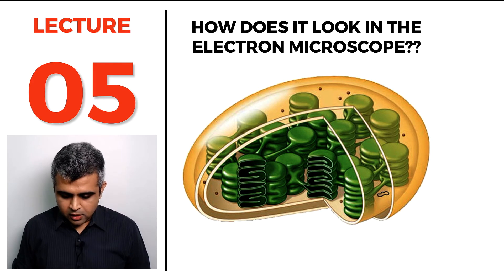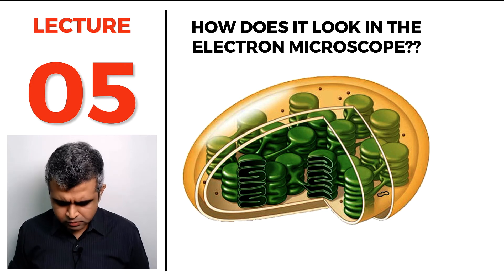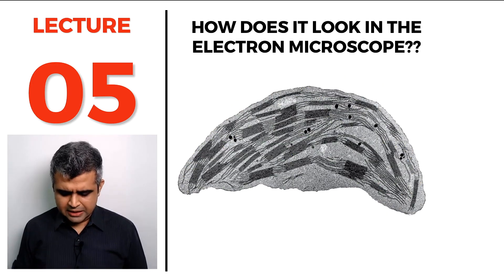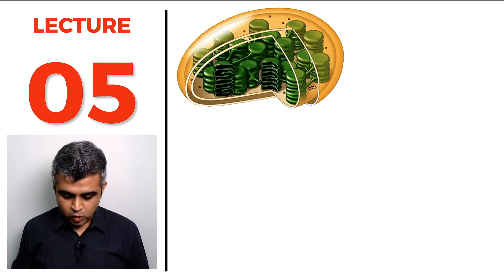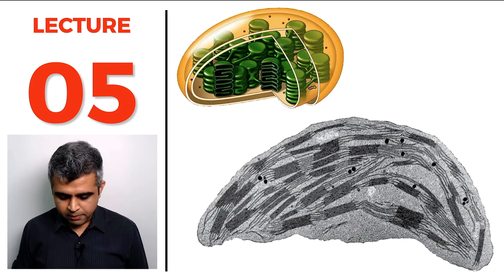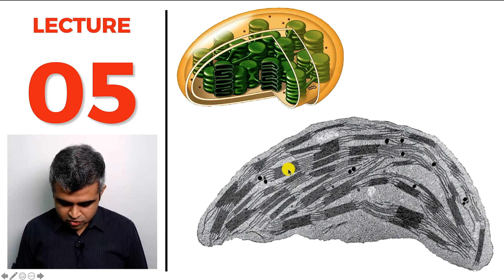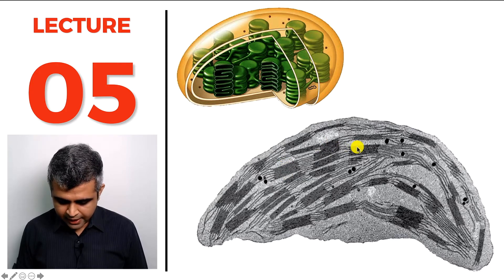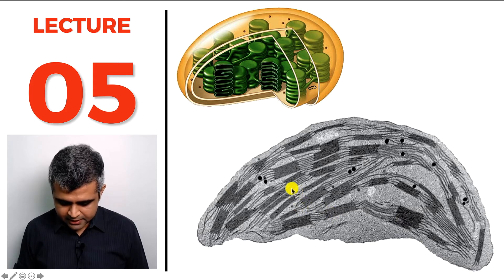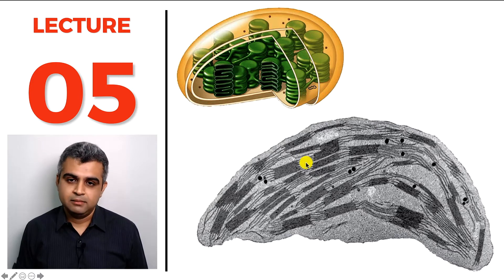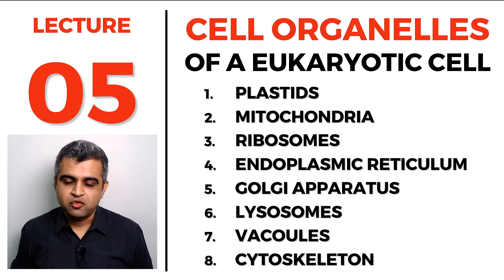Under the electron microscope, the chloroplast illustration can be compared directly: the dark stacked structures are grana made up of stacked thylakoids, connected by the stroma lamellae. That completes everything we need to know about plastids.